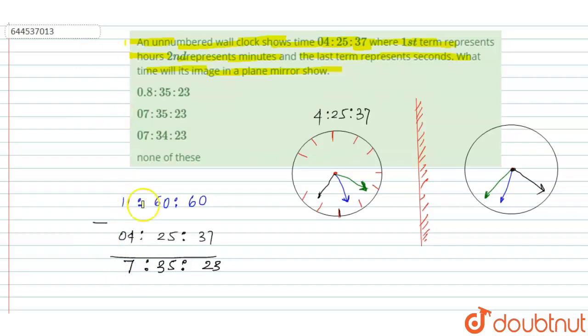That means this time reflects 7 hour 35 minute 23 second. That means this is on the 7 and this is approximately 35 and this is approximately 23 second. That means 7 hour 35 minute 23 second is the right answer of this question.